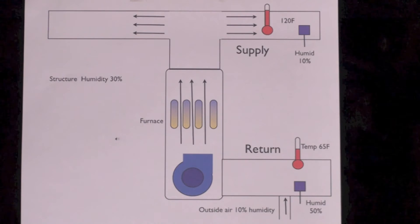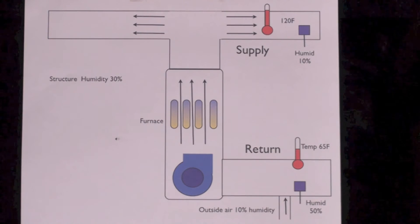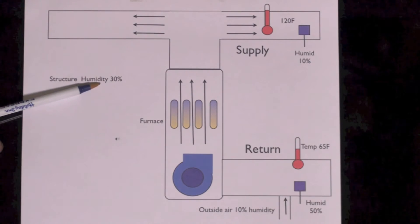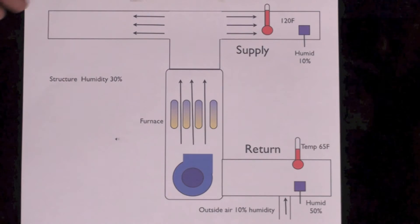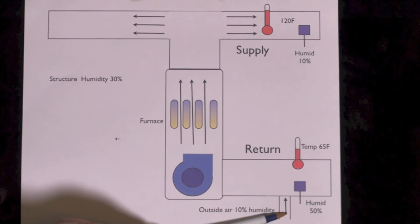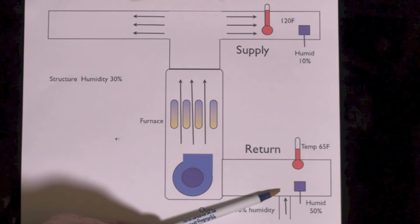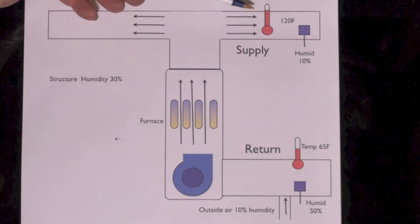Now when it gets out into the room and gets up to around 70 degrees, you end up with a structured humidity of maybe 30%. Now the reason this humidity is so low is a combination of the outside air coming in at low humidity and the fact I raised the temperature.